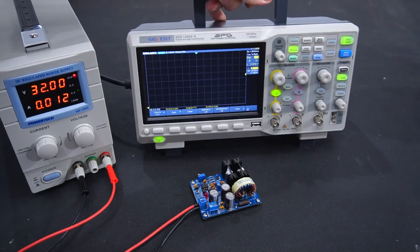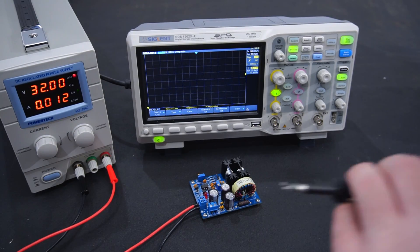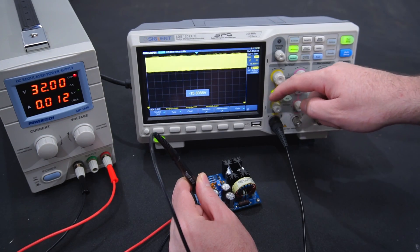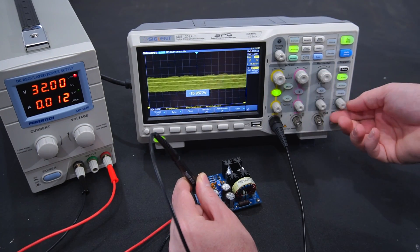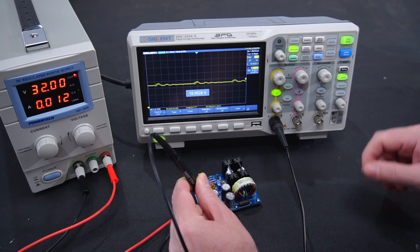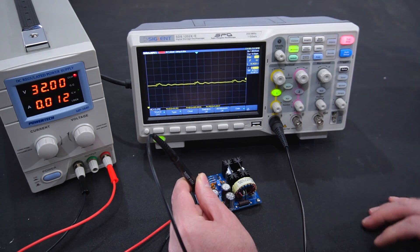Now an important aspect of any buck converter is how much voltage ripple is on the output. Ideally we'd like to see minimal voltage ripple. To inspect the waveform I'll use my oscilloscope. Well that's looking pretty nice. There is only 10.4 millivolts of ripple.